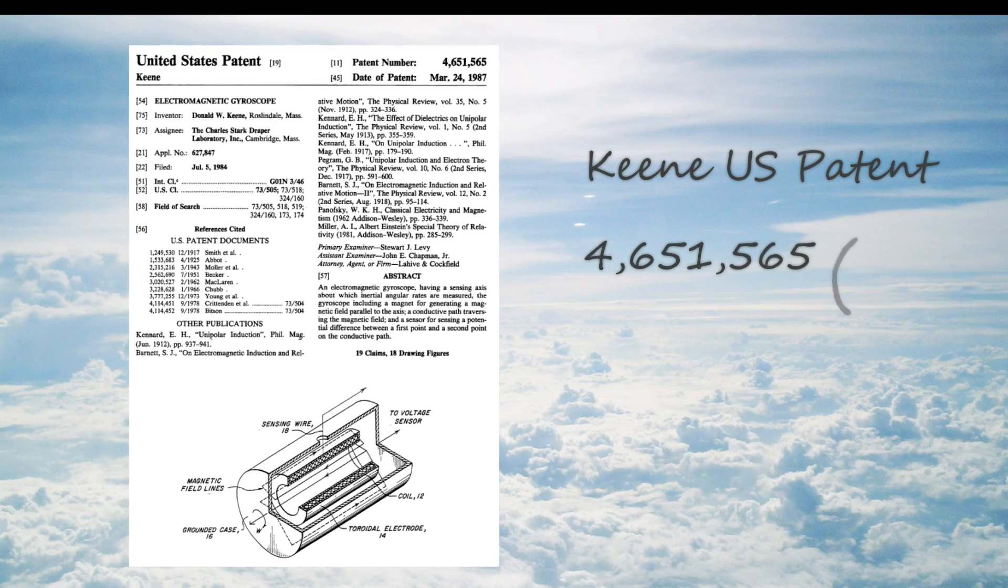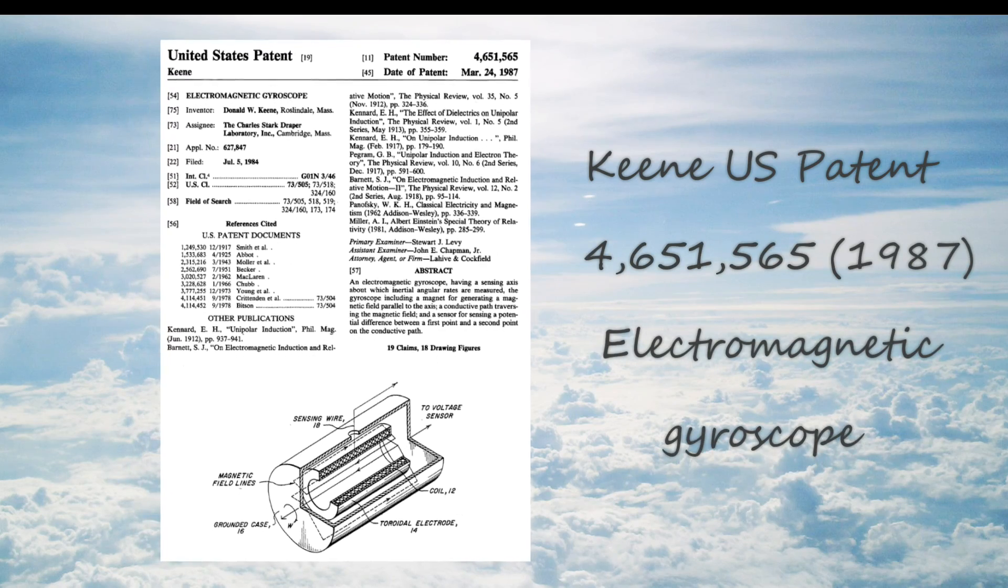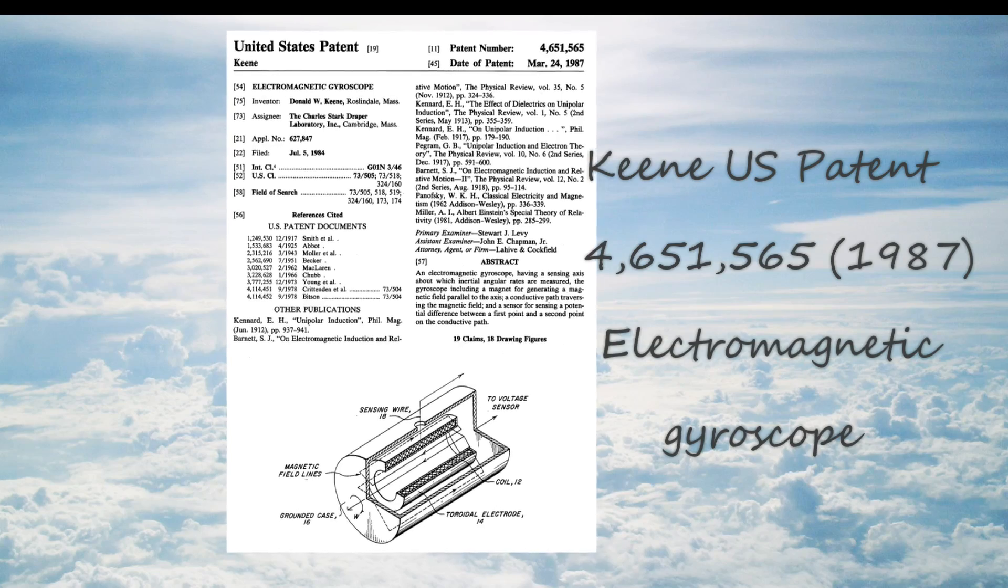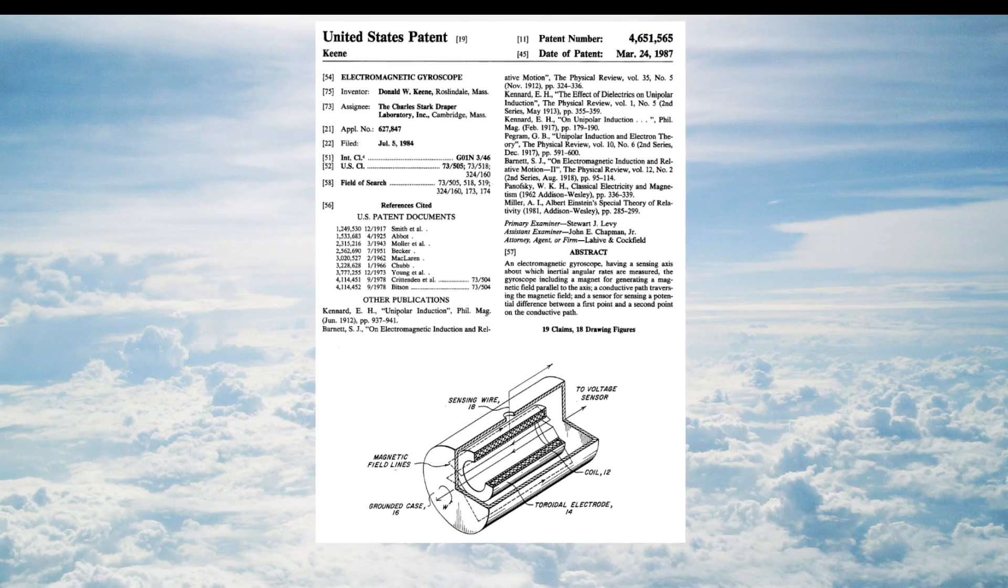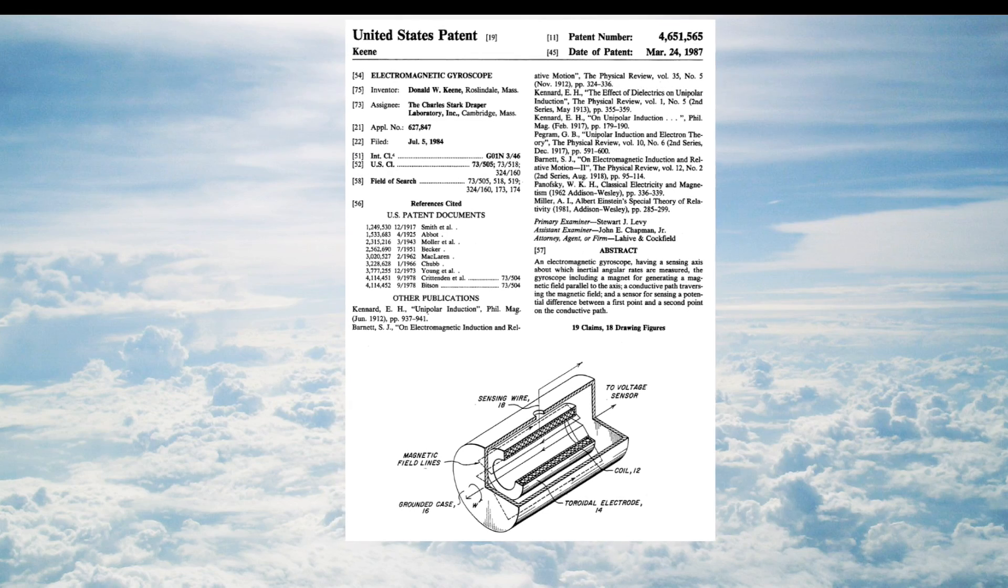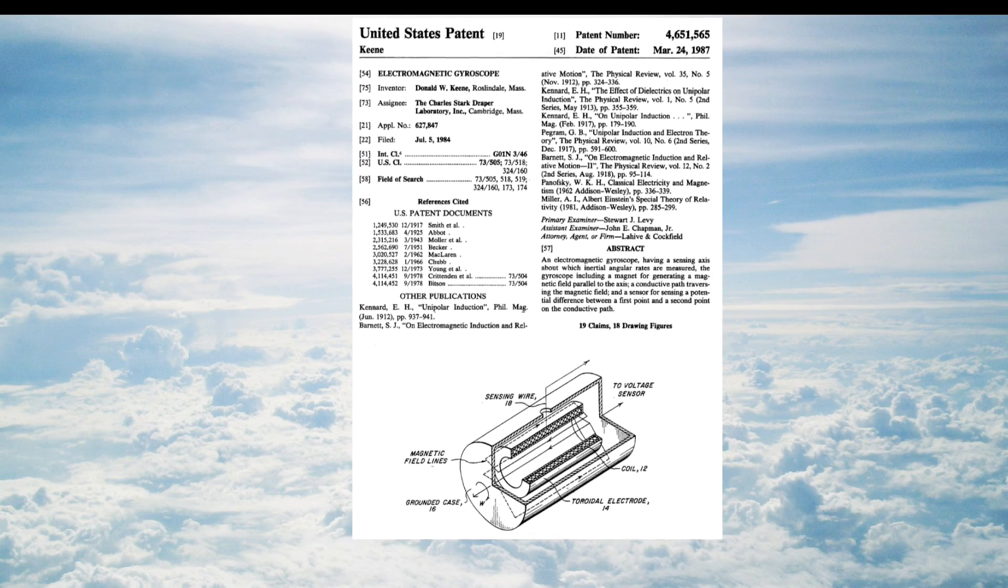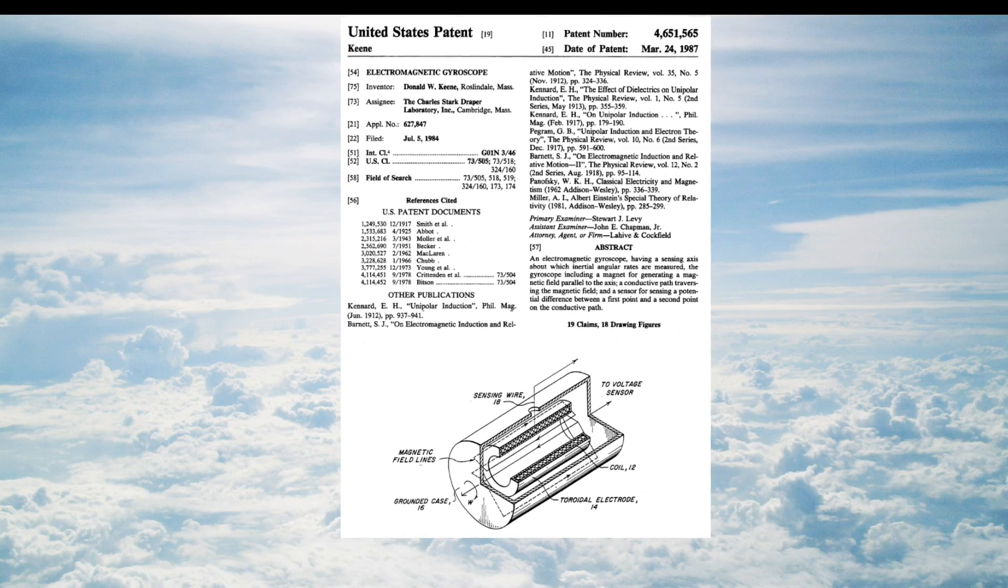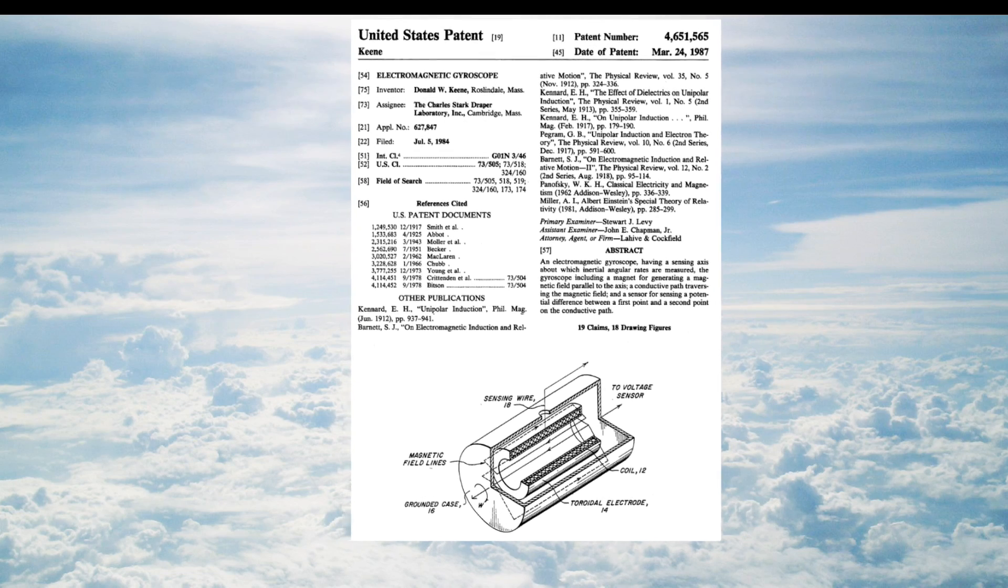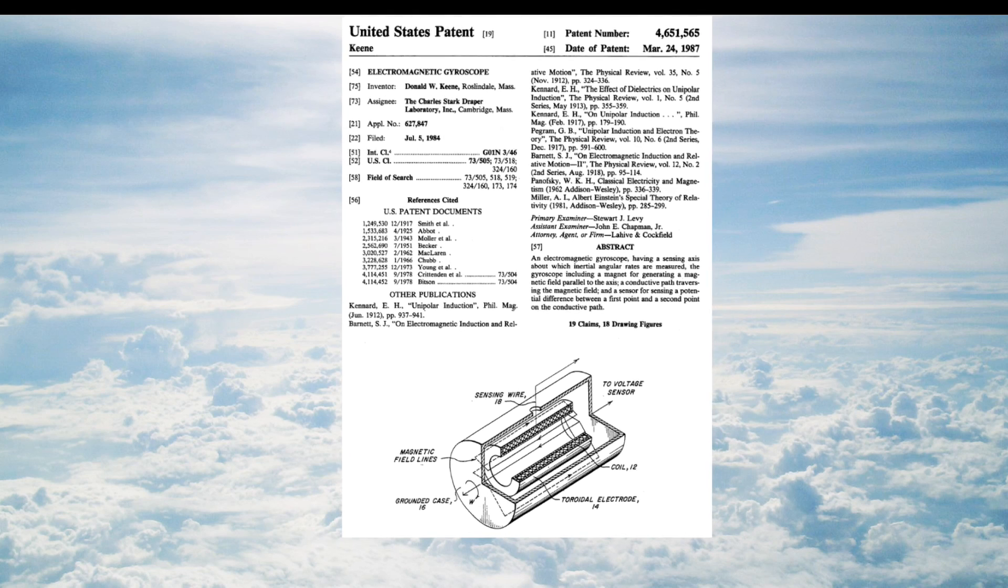This experiment remained largely ignored by the scientific community until it resurfaced again in 1987, this time in the form of a navigational instrument developed by the Department of Defense contractor of the Charles Stark Draper Laboratory. The Keene patent took Kennard's generator to the next logical level, detecting rotation with respect to absolute space for the purpose of inertial navigation.